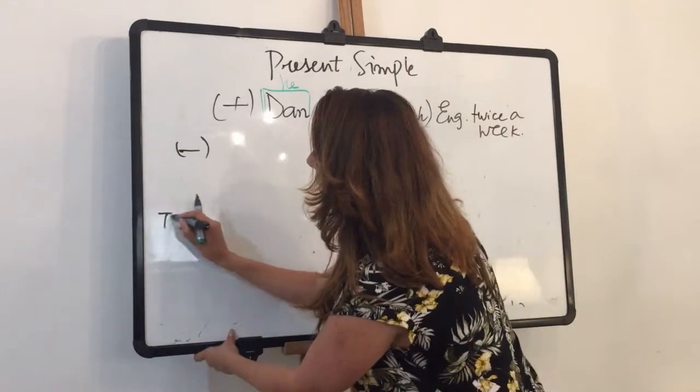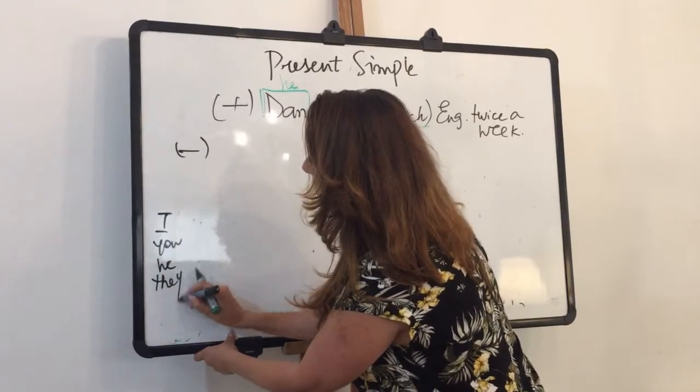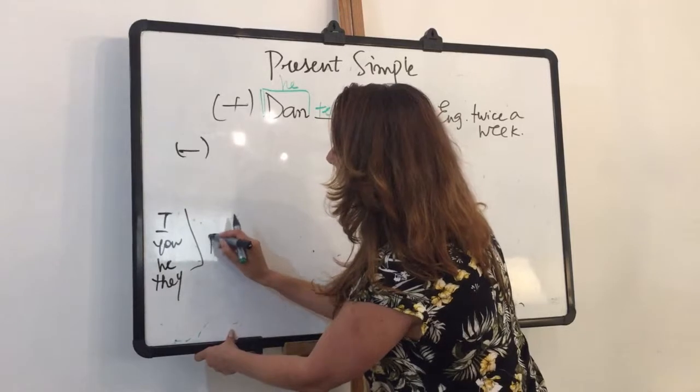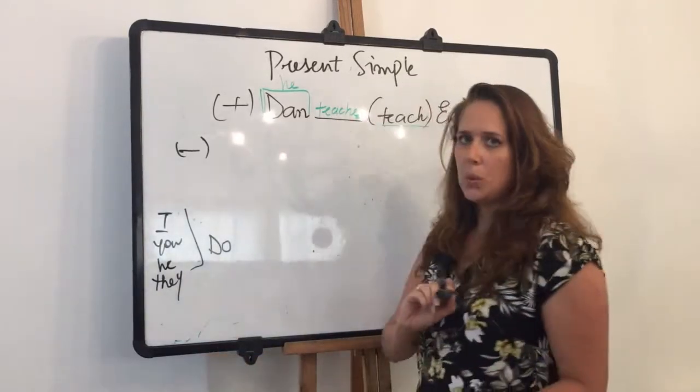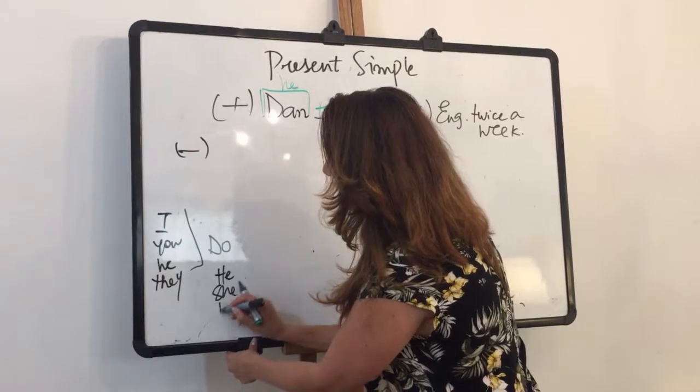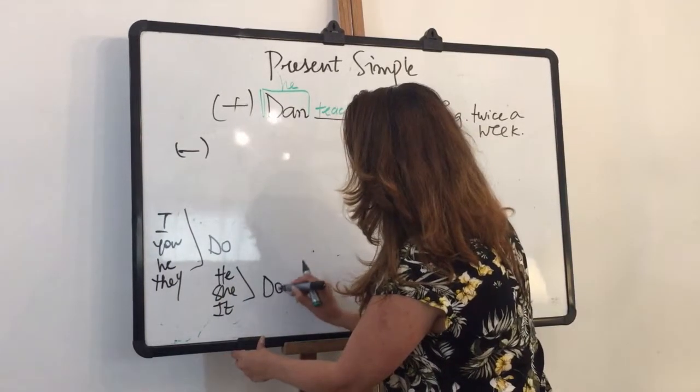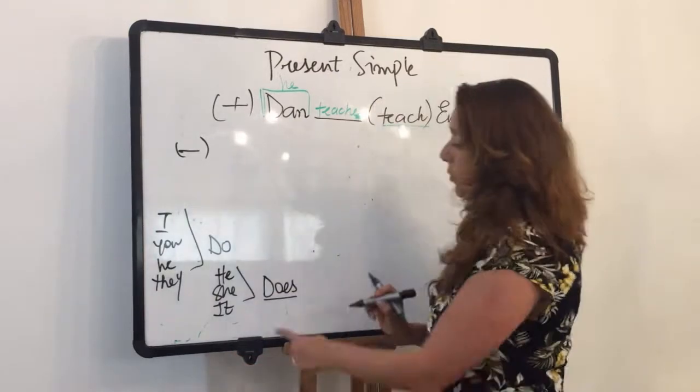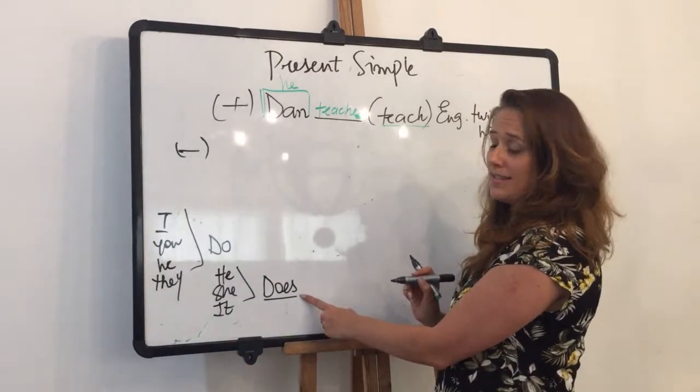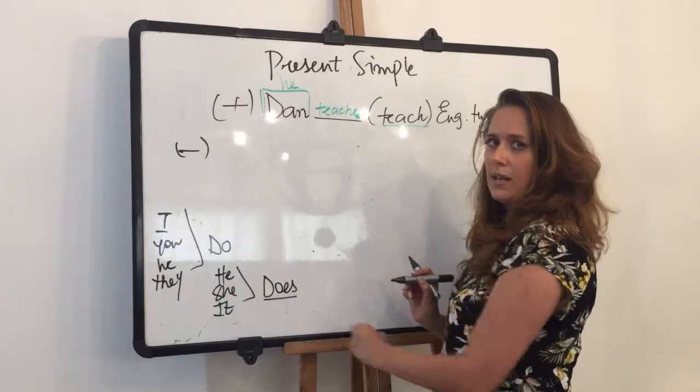So if I'm going to do it right here. I, you, we, and they. They would get the auxiliary verb do. And he, she, and it. That group gets the auxiliary verb does. Which is do with ES. Do ends with O and it gets ES, and it makes does.